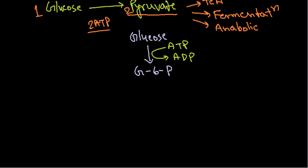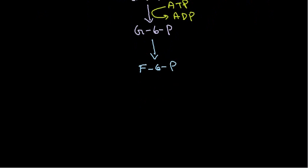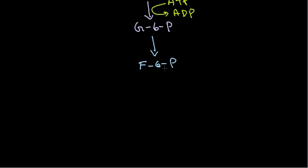From glucose-6-phosphate, a simple rearrangement occurs and they produce fructose-6-phosphate — also a six-carbon molecule. Nothing particularly important happens at this stage; it's just an isomerization.